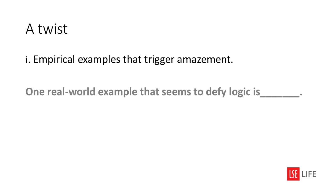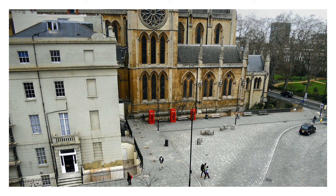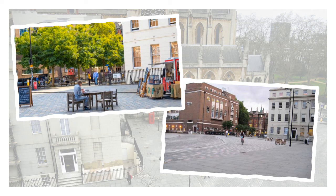'One real-world example that seems to defy logic is ___.' One example, for me, is Bing Place — a corner of London near LSE that was redesigned a few years ago to make all the surfaces quite similar, so that cars, bicycles, pedestrians, and people sitting having a coffee all share the same space. You might imagine that separate, differently marked surfaces and plenty of signs would be safer. But the argument is that when it's less obvious who should be where and who has the right of way, people pay more attention and are more careful. That, to me, triggers amazement and a lot of questions. Maybe there are situations like these in your life that make you ask questions too.